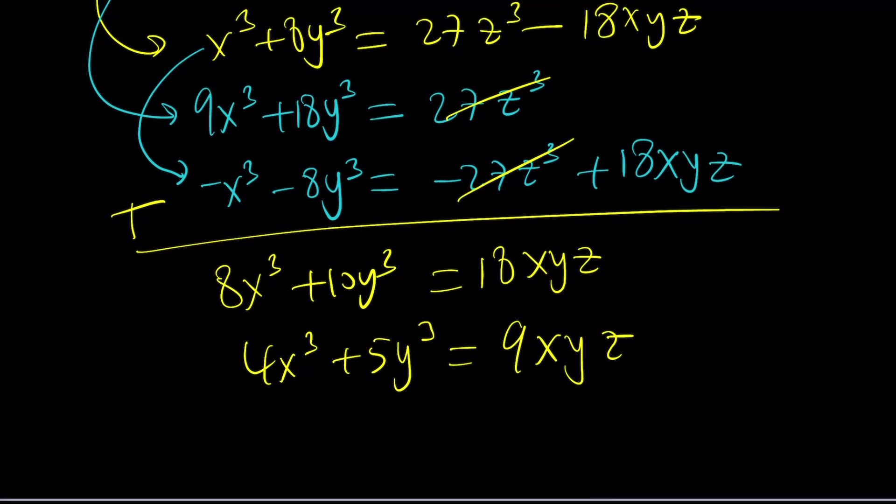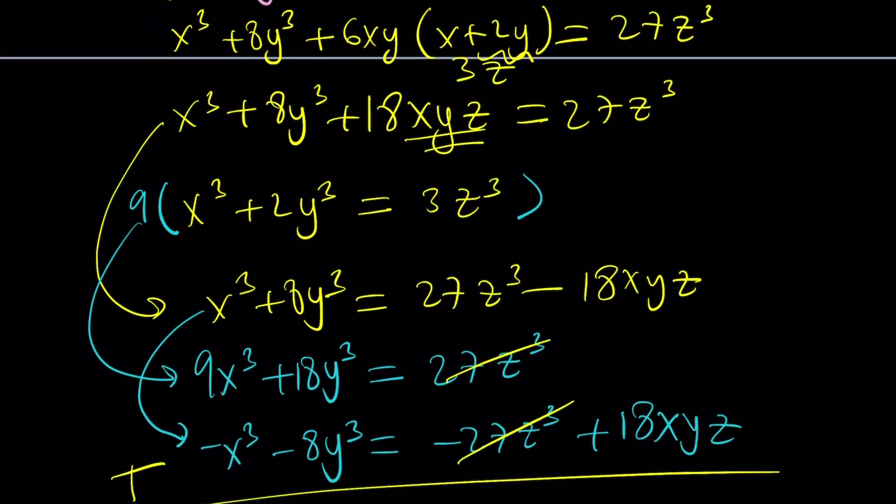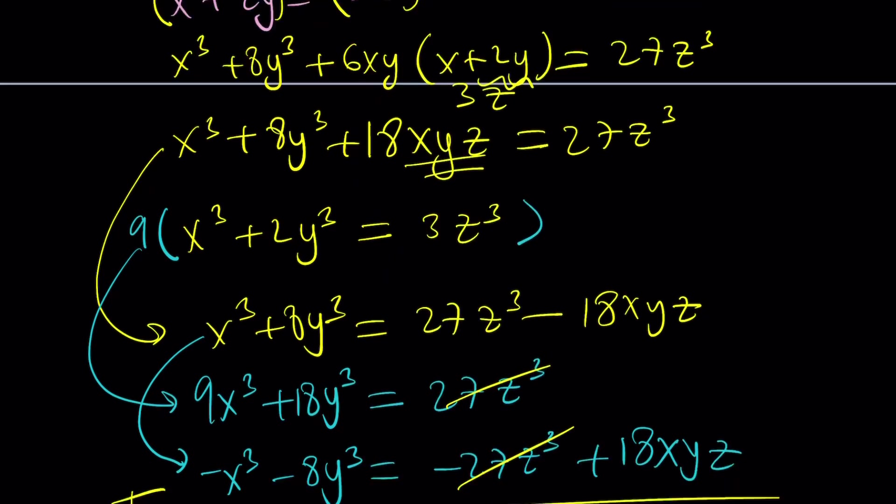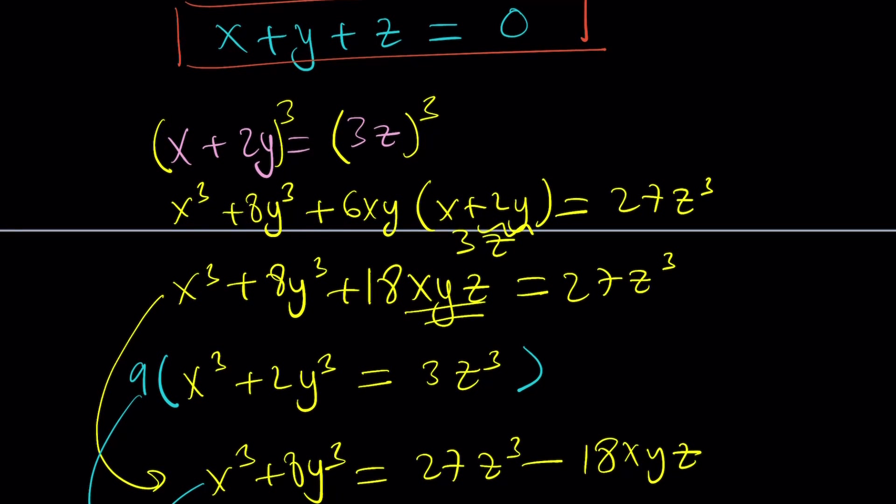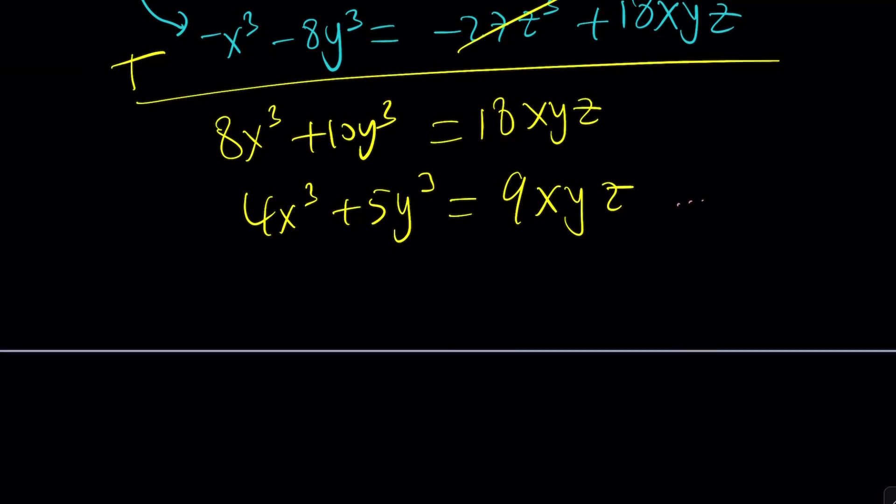And from here, I'm getting 8x cubed plus 10y cubed is equal to 18xyz. Not very helpful. If I divide by two, I'm going to get something like this. And I don't even know if this is going to help. You see, we have the four plus five equals nine again. That's such a weird, spooky situation that we keep getting, right? But anyways, I don't know if this is going to help at all. Maybe there's a way to solve this problem. By the way, let's not forget that we're supposed to find x plus y plus z, so it may not come out that easy.